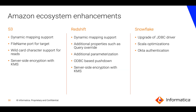On the Amazon ecosystem, dynamic mapping support has been introduced for S3 and Redshift, along with file name ports for targets and wildcard character support added to S3. The Redshift connector itself has seen several enhancements in parameterization, and ODBC-based pushdown is now supported for Redshift sources and targets.